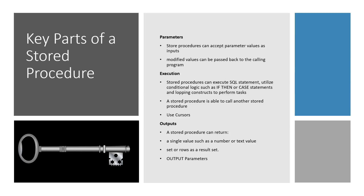That would be a set of rows. We can also set up, as part of our parameters, a parameter that has an output keyword on it. When we set that parameter value, that value can get returned back to our calling program, so it's a way of passing that value back and forth.